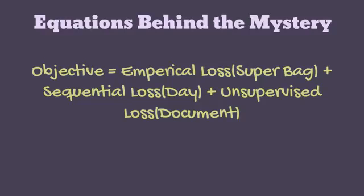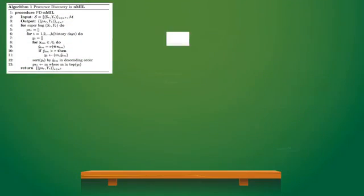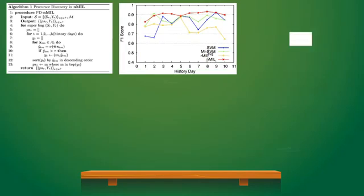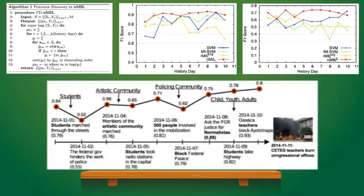After we learn the nested multi-instance structure, we can easily identify the news articles as precursors per day based on their estimated probabilities given a threshold.